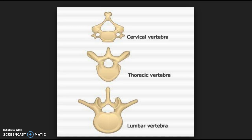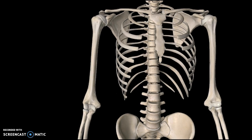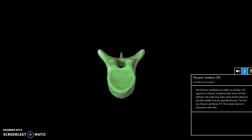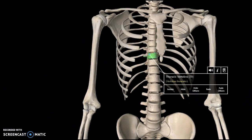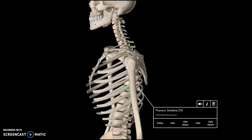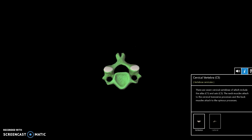There are two additional holes on top of the vertebral foramen — that big hole in the middle — for the cervical vertebrae. These are called transverse foramen. If I isolate the thoracic one, you don't see any transverse foramen, but if I isolate a cervical vertebra, you can see these two individual foramina.